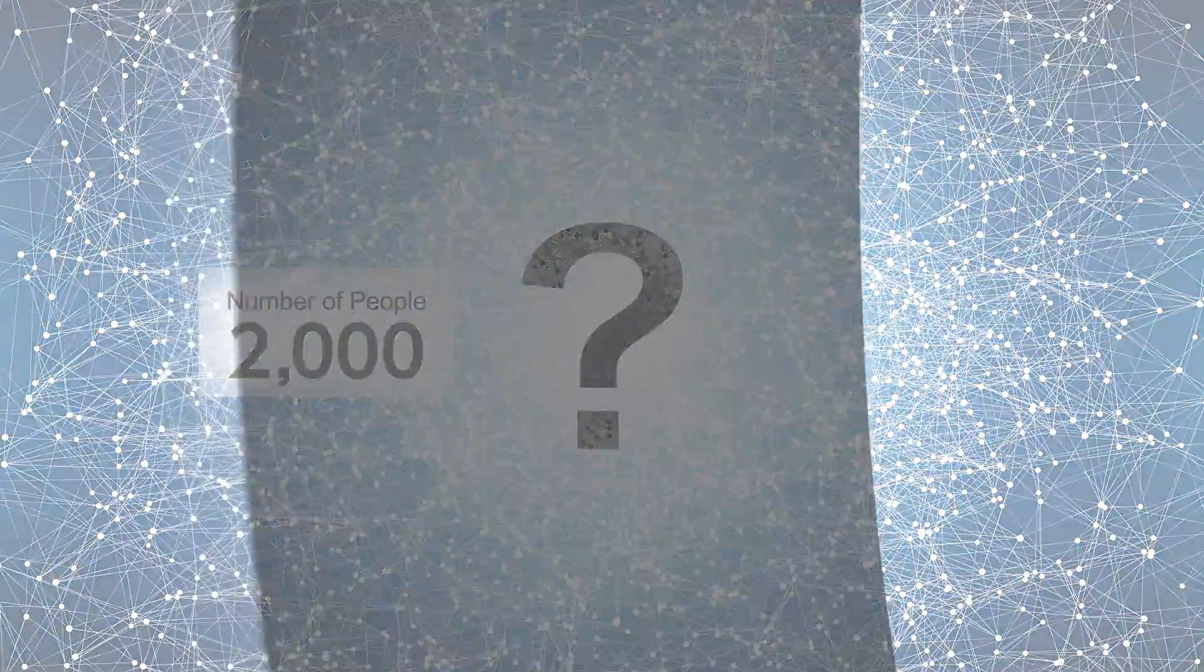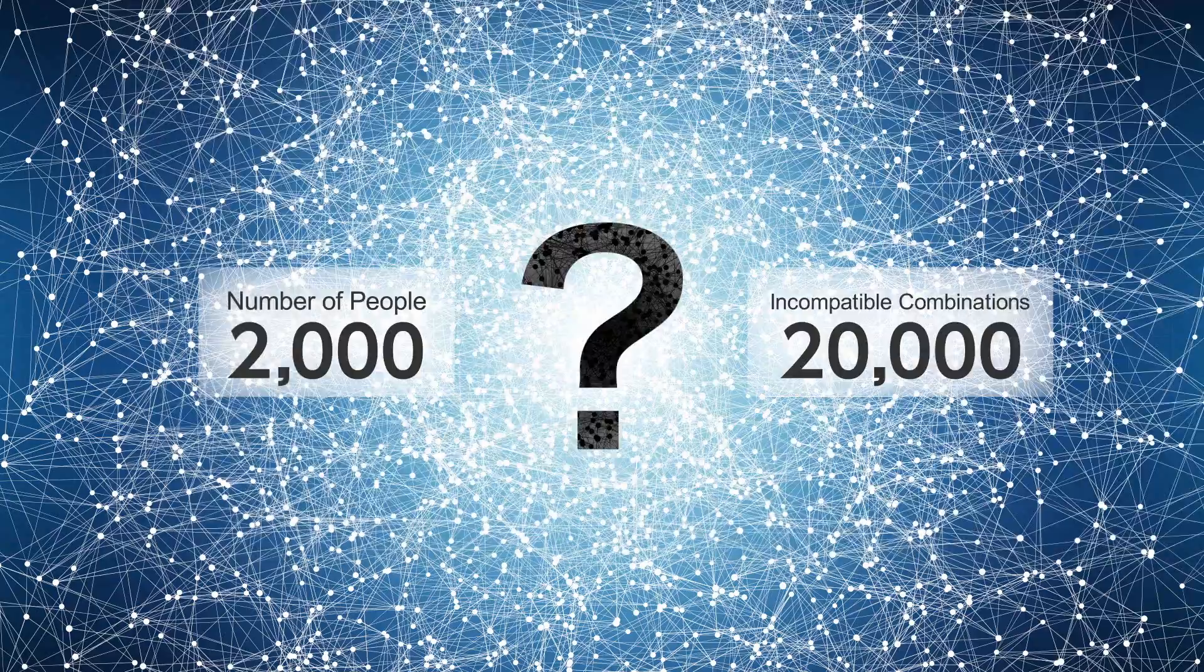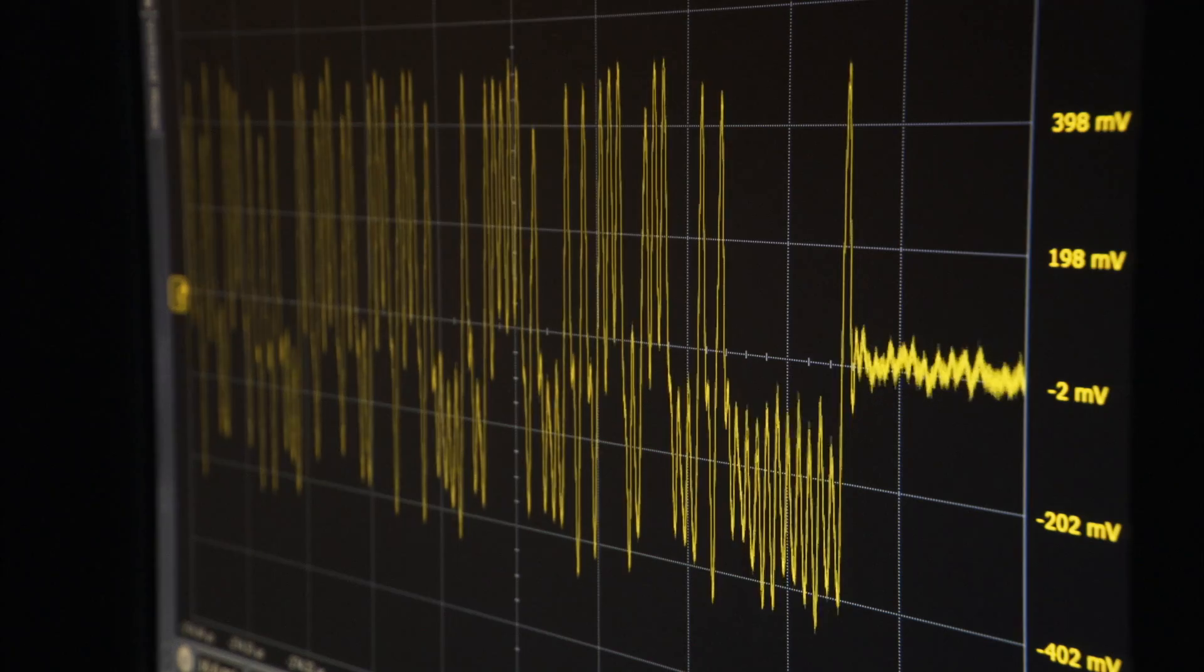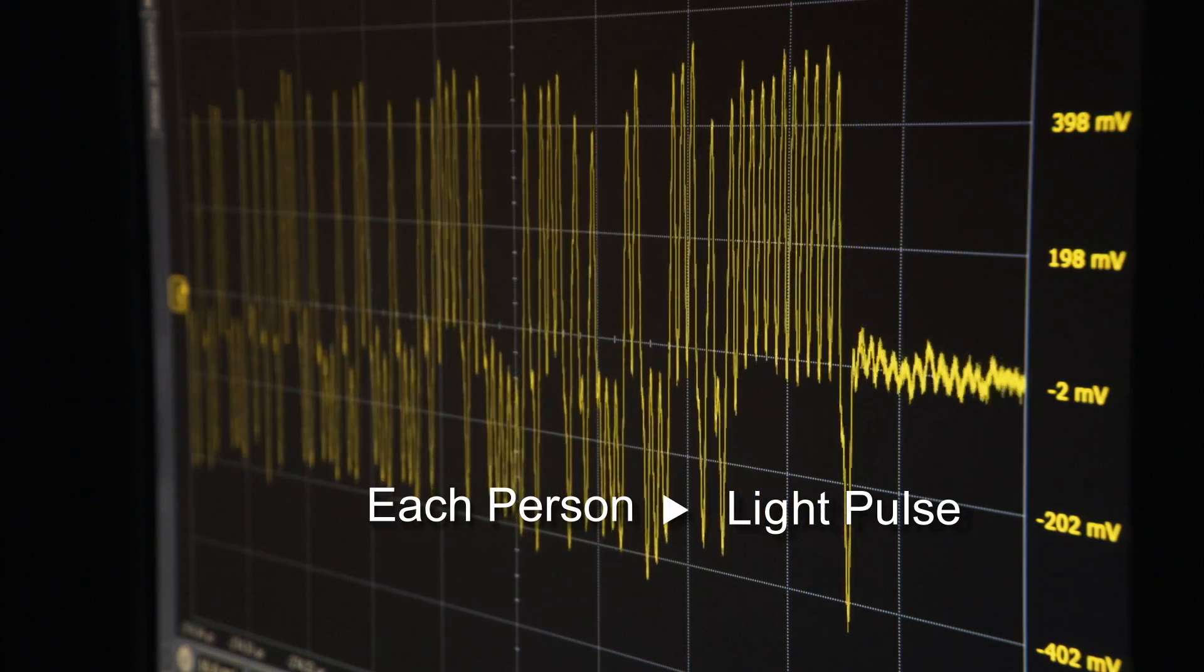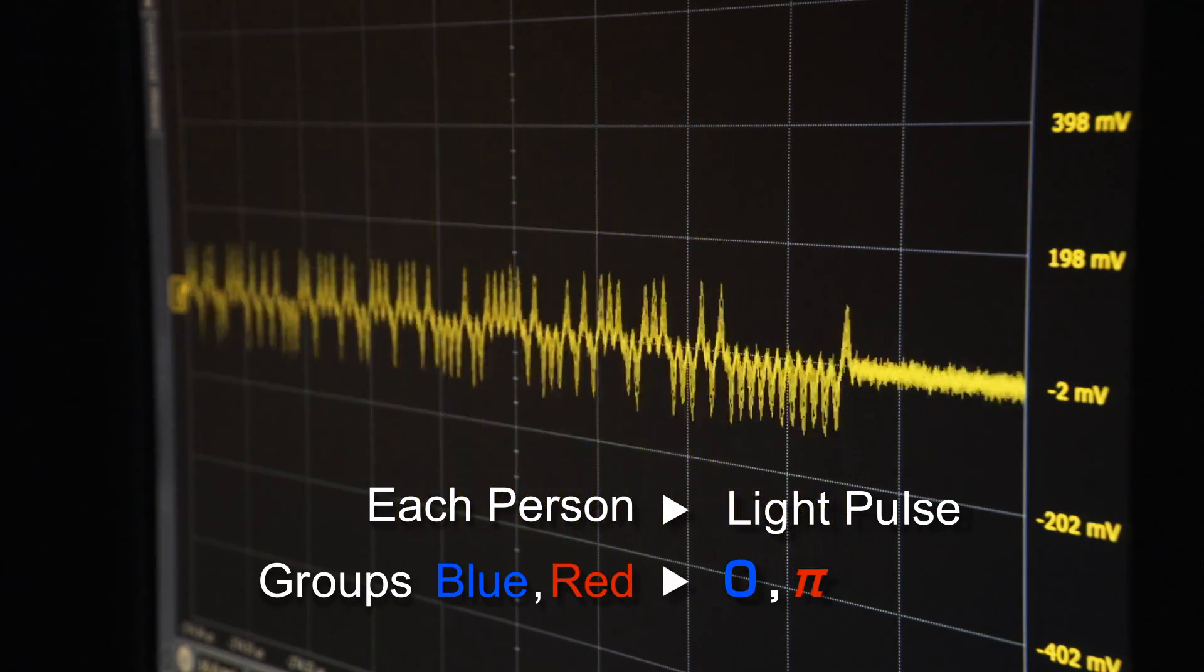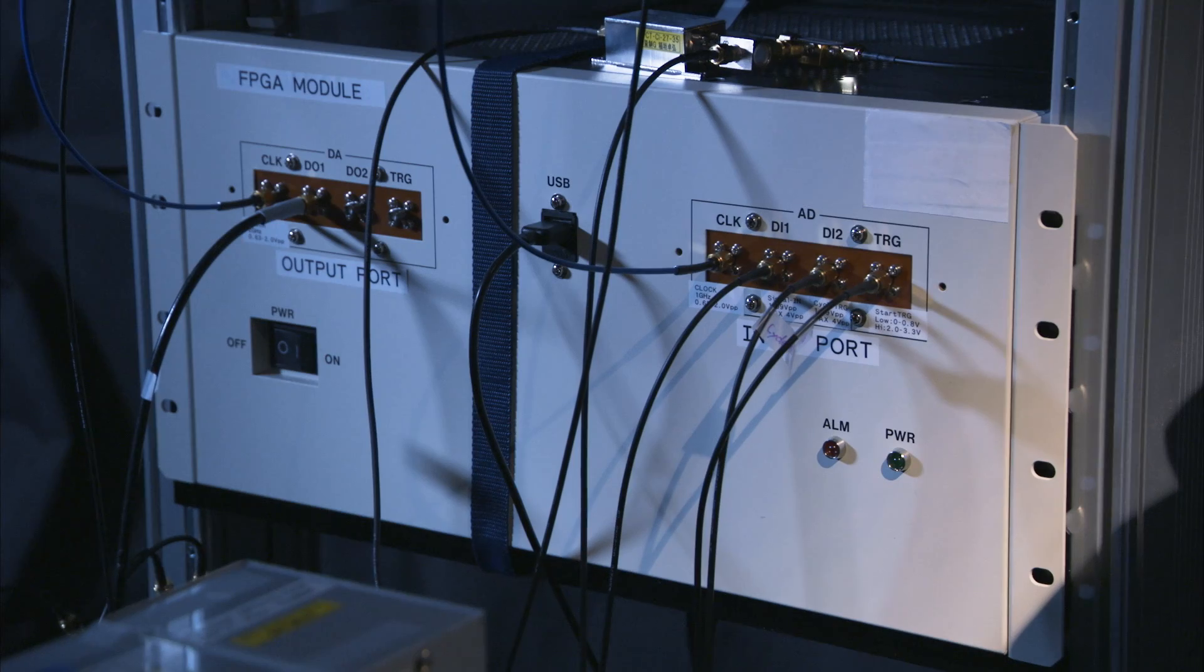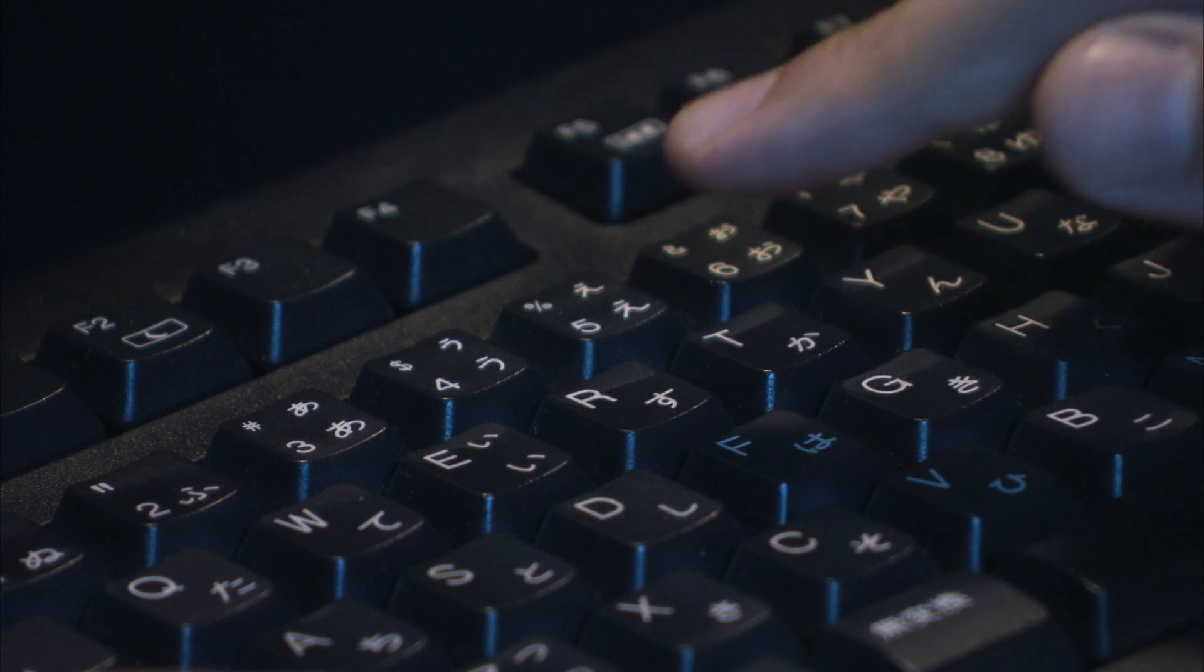We will use the quantum neural network to solve a huge example with two thousand people and twenty thousand incompatible combinations. We represent each person with a light pulse and the two groups as zero and pi. Then we enter the incompatible relationships into the FPGA and begin the computation.